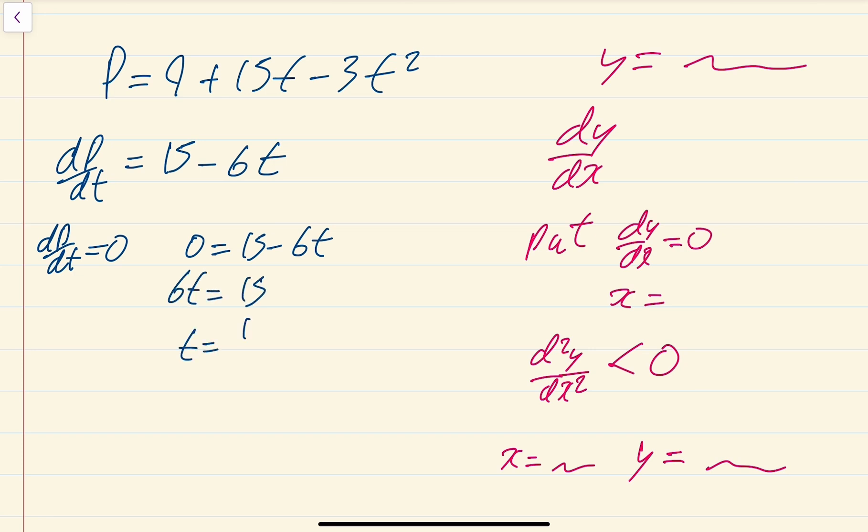So t = 15/6, and 15 divided by 6 cancels down - divide by 3 to give you 5/2, which is 2.5. We've got our t value. We then need to do the second derivative test.